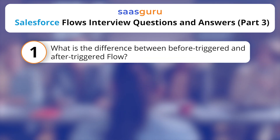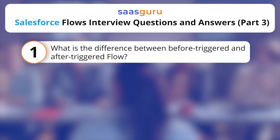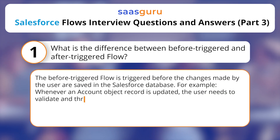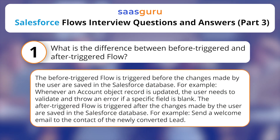What is the difference between Before Triggered and After Triggered Flow? The Before Triggered Flow is triggered before the changes made by the user are saved in the Salesforce database.